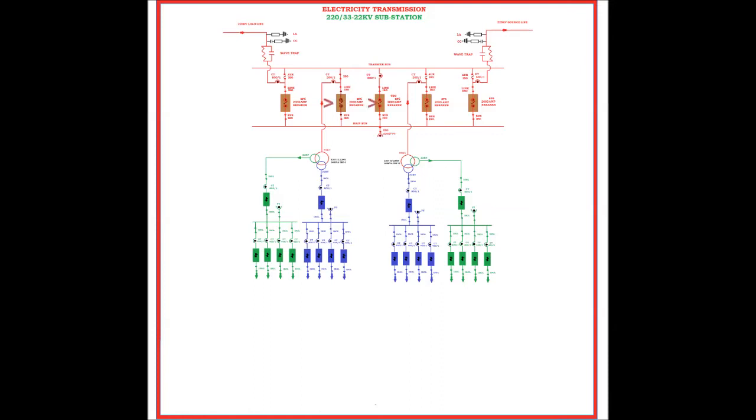In this condition, transformer one is being supplied through its own line and TBC as well. Now turn off the breaker of transformer one and open bus and line side isolators of the same. Hence we have isolated the breaker without interrupting power supply at all.